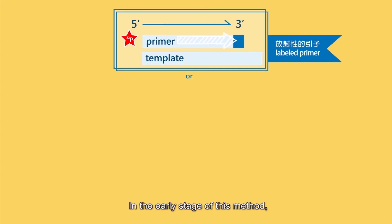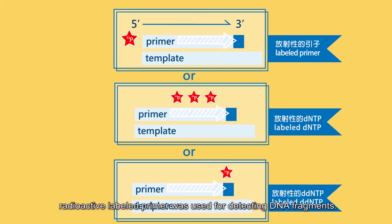In the early stage of this method, radioactive labeled primer was used for detecting DNA fragments.